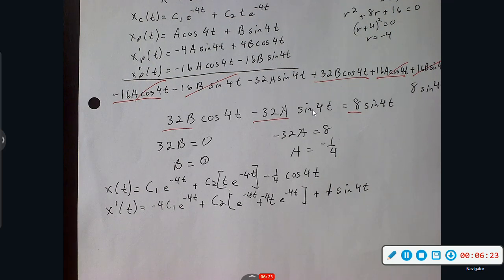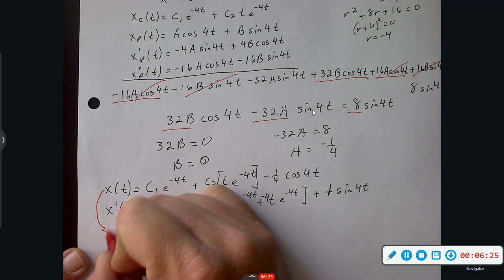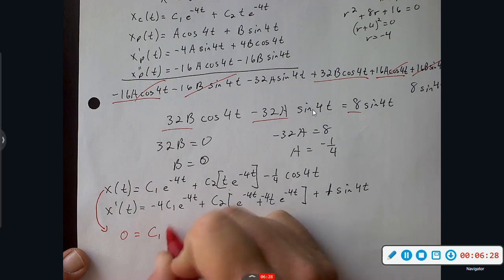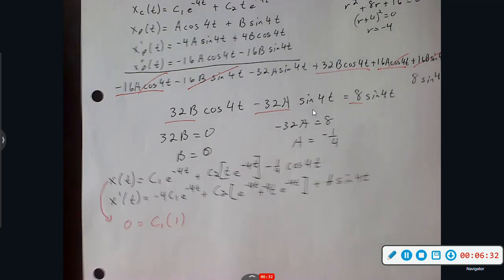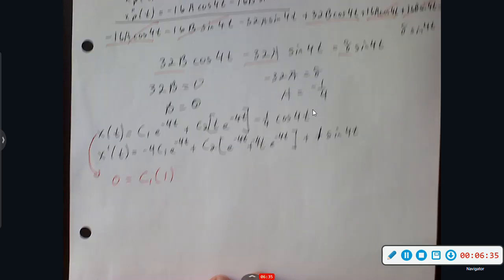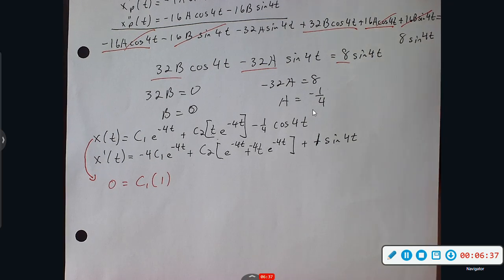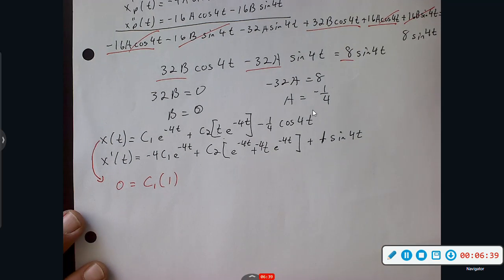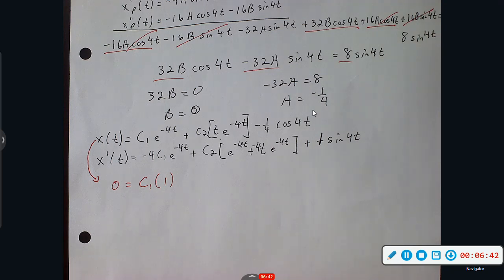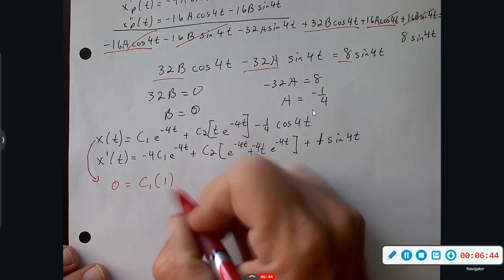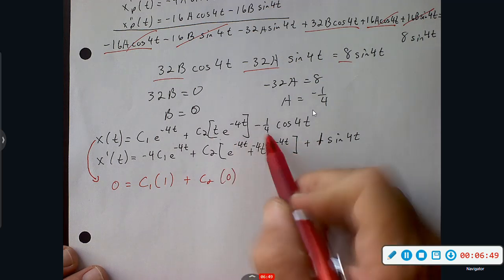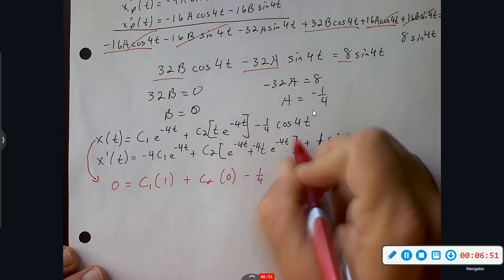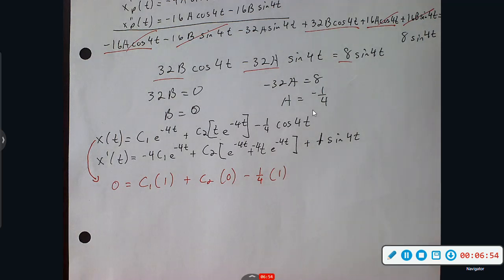Alright, so we're ready to plug some values in. Let's plug in our values. Zero. C1 times one, e to the zero is one. Let's move this up a ways. Alright. Plus C2, well that's going to be zero, gone, because I'm plugging in zero. And then cosine turns to one, cosine of zero turns to one. So C1 is going to equal one fourth.